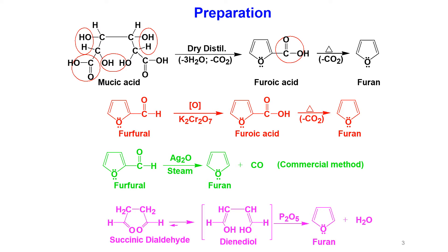Now about the preparation of furan — we can prepare furan in many ways. In the first method, when mucic acid is distilled under dry conditions, it is converted to furic acid. During this distillation, three molecules of water and one molecule of carbon dioxide are eliminated. After that, upon decarboxylation, furic acid is converted to furan.